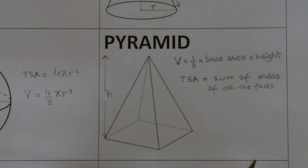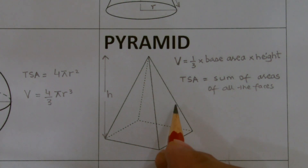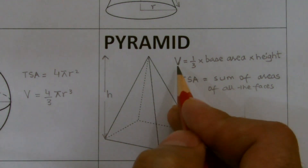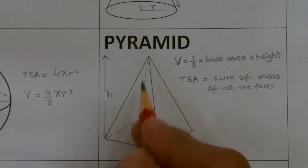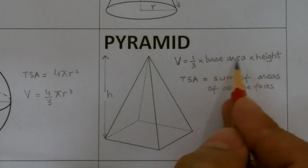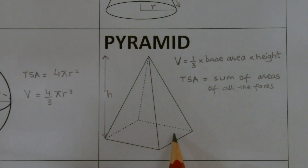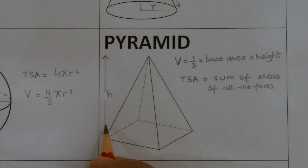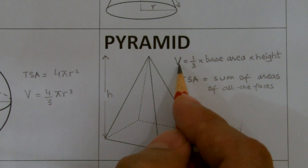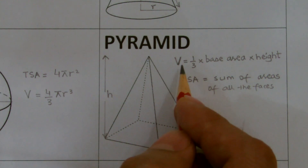Next is a pyramid. To find the volume, the formula is (1/3) × base area × height, where height is the vertical height, not the inclined one. The base could be triangular, rectangular, hexagonal, or any geometrical shape. Simply find the base area of the given figure, multiply by the vertical height, then multiply by 1/3 to get the volume of the pyramid.